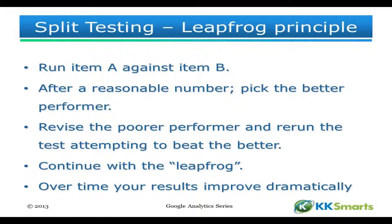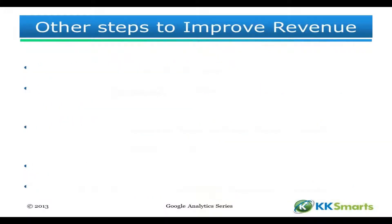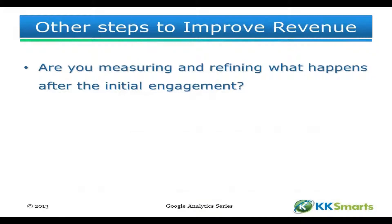You get to a point where the return on investment of your marketing is much greater than it used to be, because you've continued to test, improve and measure. That is a really important element. What other steps can you take? Well, you can measure and refine what happens after the initial engagement. For many people, the website may be the start of a process — and in being the start of a process, it's not the whole of the process. You've got what happens afterwards. By changing the process that people follow, the things that you do, the ways you try to engage with them, you can improve the results — all of that driven by the ability to measure.